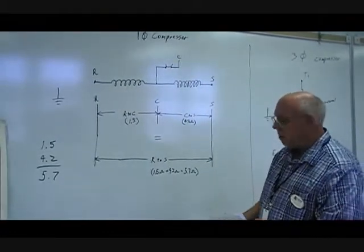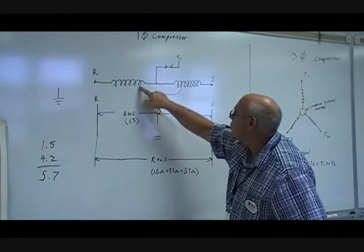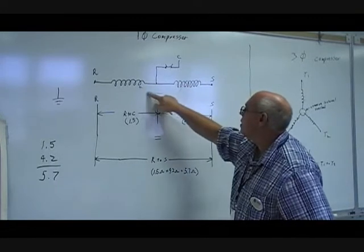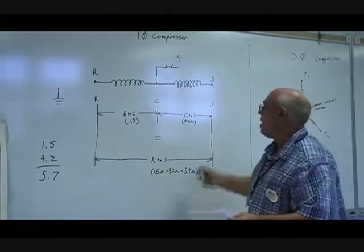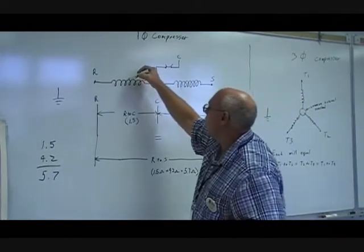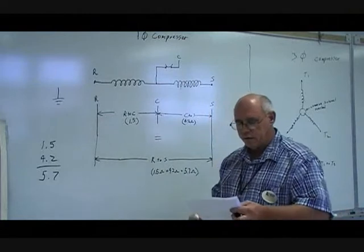Another would be a start to run internal short. In that case, they're not going to add up correctly. Another would be where we would have maybe a start winding shorted to ground. In that case, we would wind up with resistance to ground.